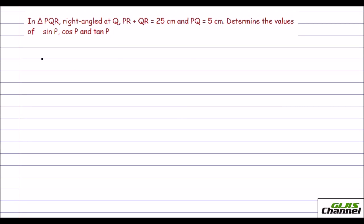Vasavi here. I am here with yet another problem. Let's see how to work this out in this video. So the question is, in triangle PQR, right angled at Q, PR plus QR is 25 cm and PQ is 5 cm. Determine the values of sin P, cos P, tan P.